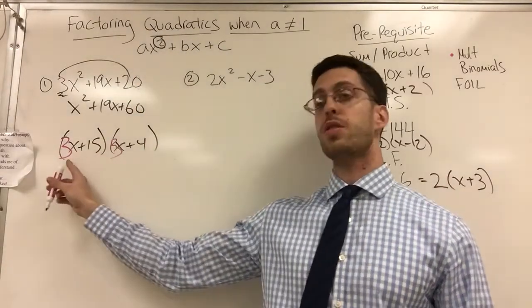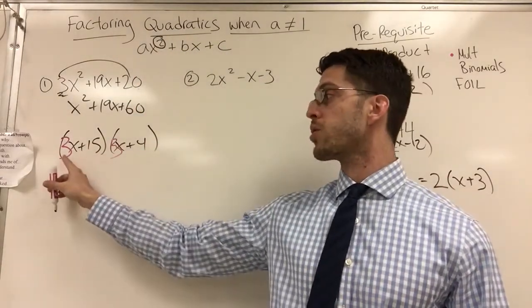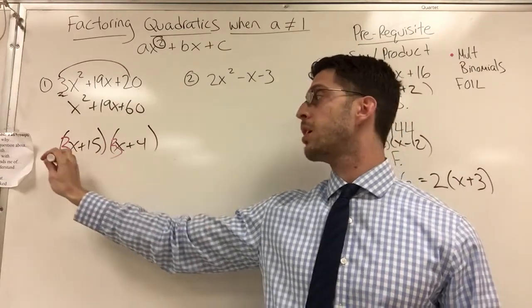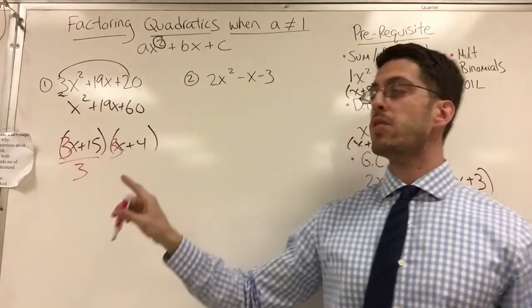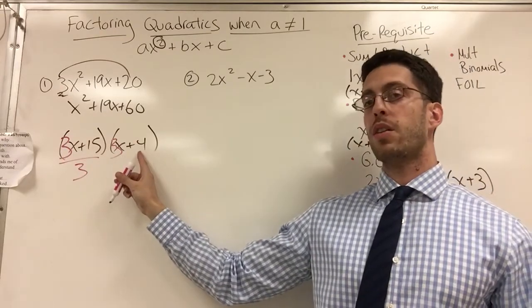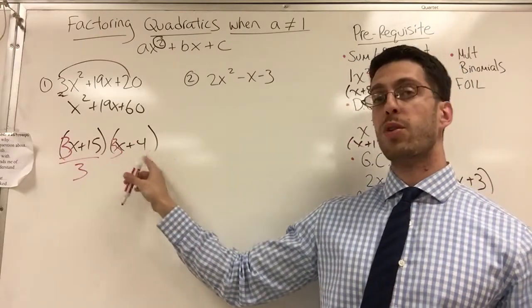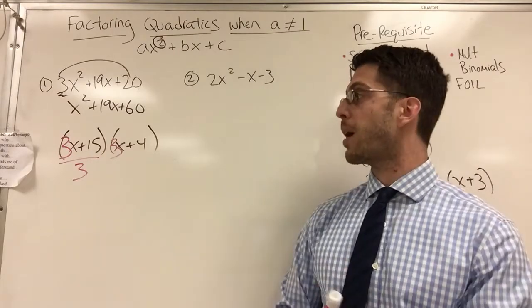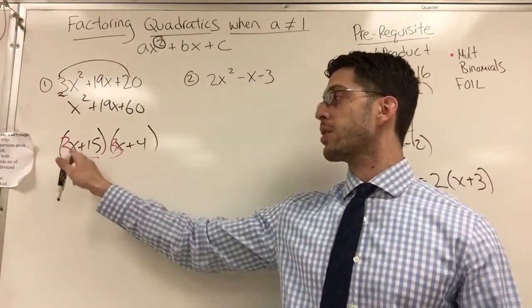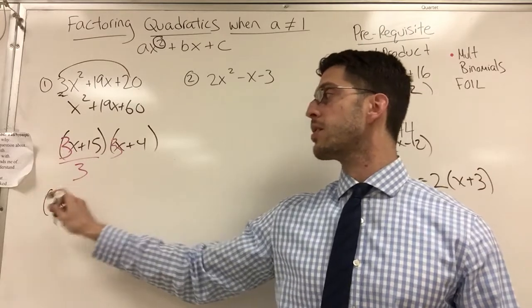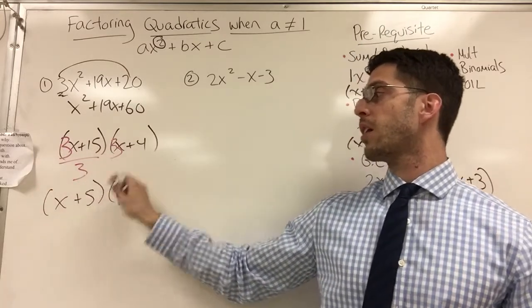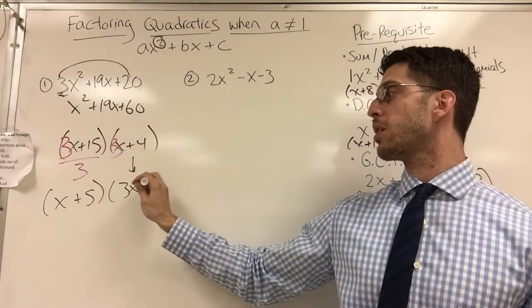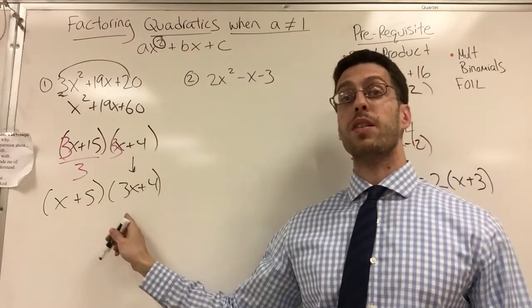Divide by the GCF. So I'm going to look at this thing. Is there a GCF here? Yes. What goes into 3x and 15? 3 goes into both of them. Divide by 3. Is there a GCF here? Is there a number that goes into 3 and 4 besides 1? No. Leave it alone. Now if I divide by 3, 3x divided by 3 is x. 15 divided by 3 is 5. This thing is going to drop straight down. 3x plus 4 drops down. And this is my answer.